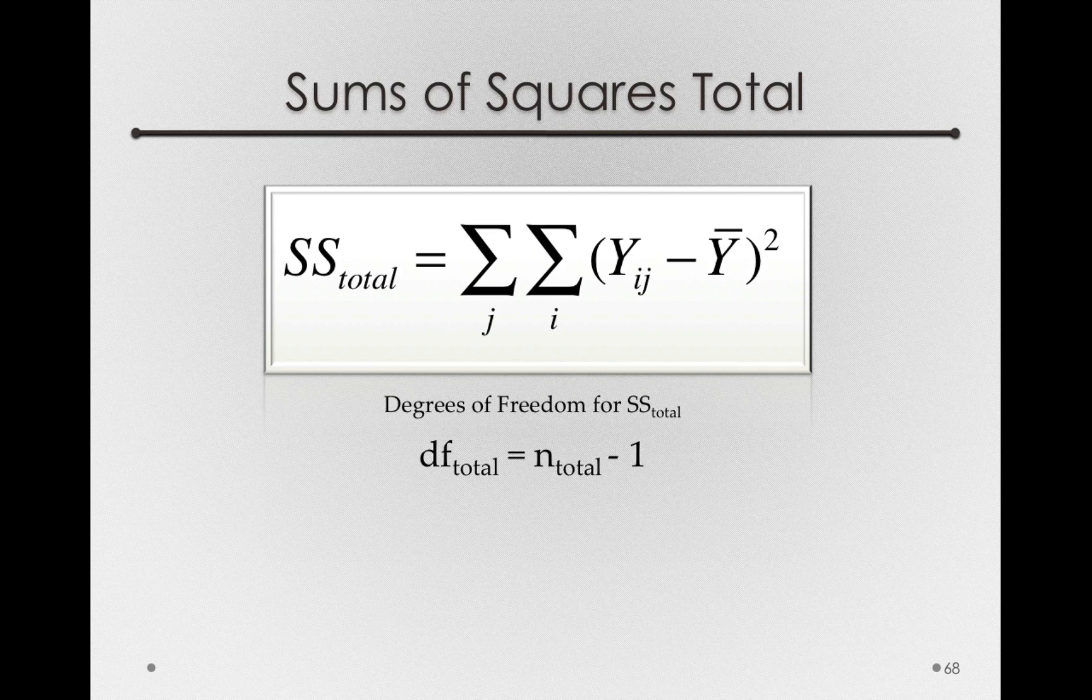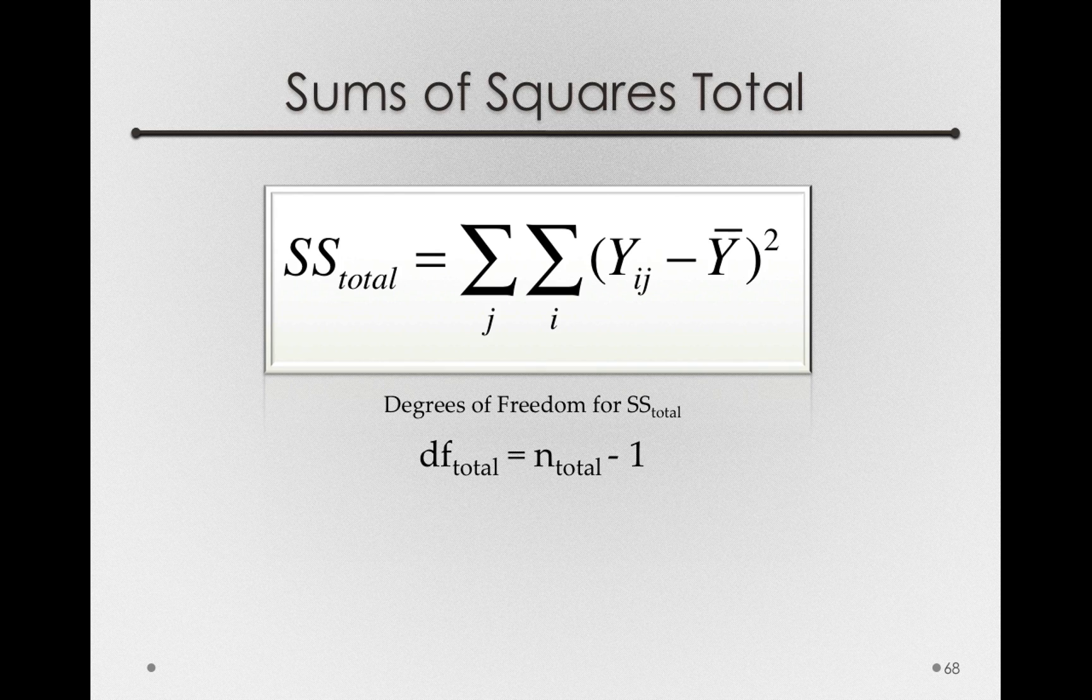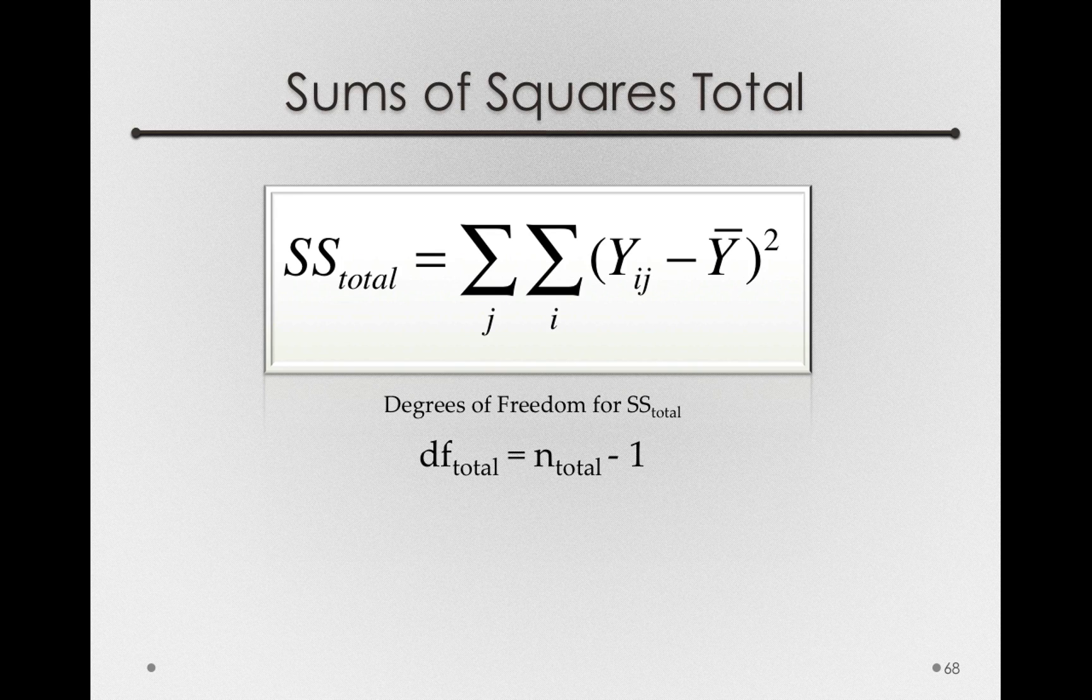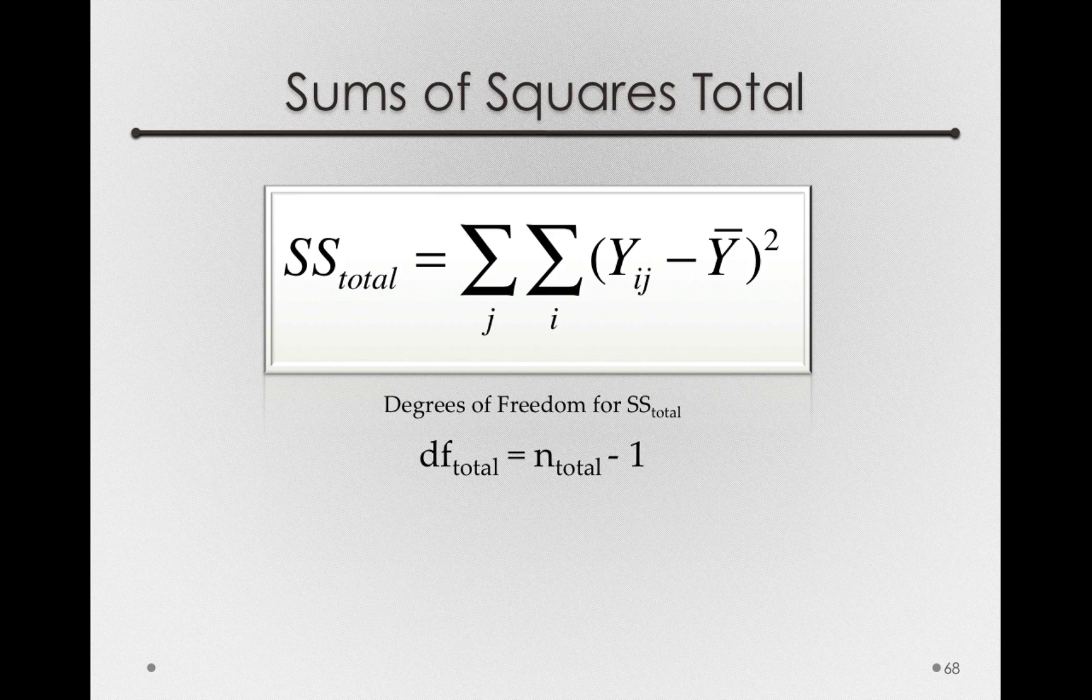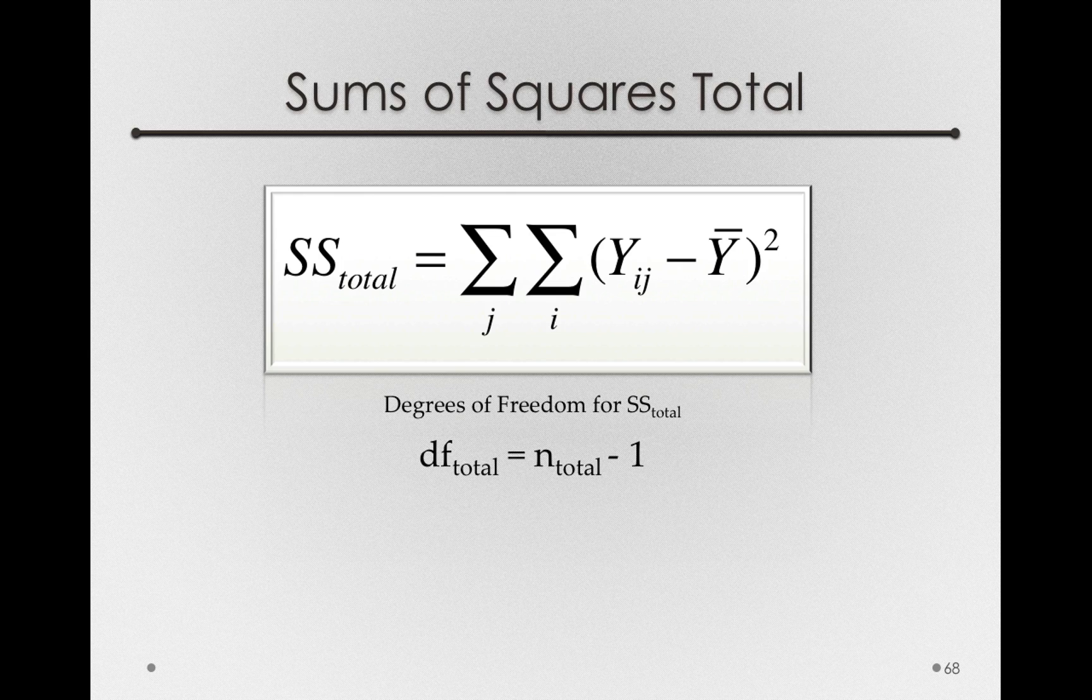n here is just the total number of people we have in the entire sample, ignoring group. So the degrees of freedom total is simply n_total minus one. That is, the total amount of independent information we have in our sample in order to estimate a population variance. But now, we are going to break apart that n_total minus one degrees of freedom into separate pieces, one part for treatment and one part for error.